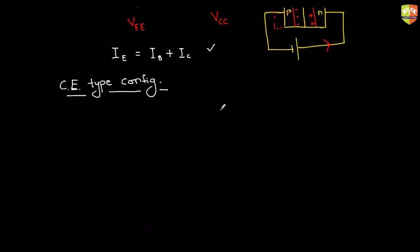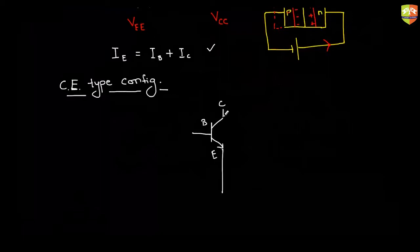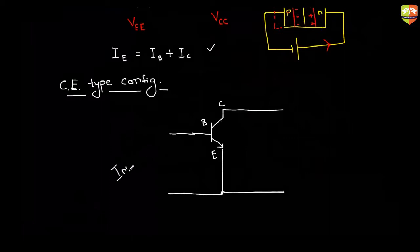A transistor will be like this. So let's say this is emitter, this is collector, and this is base. Now why is it called common emitter? Because in this configuration, the output is between collector and emitter, and between emitter and base you have the input. So emitter is common between input and output — that's why it is called common emitter.